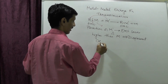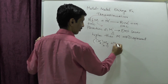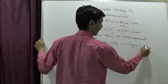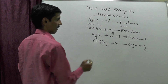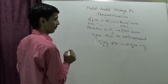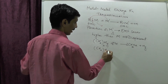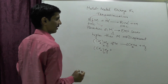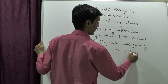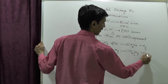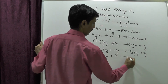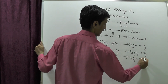Example one: dimethyl mercury, (CH₃)₂Hg, treated with sodium gives 2 CH₃Na plus Hg. Example two: dimethyl mercury treated with magnesium gives (CH₃)₂Mg plus Hg.